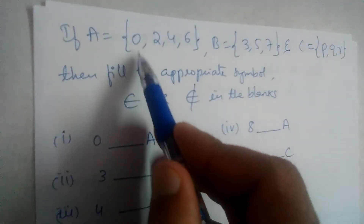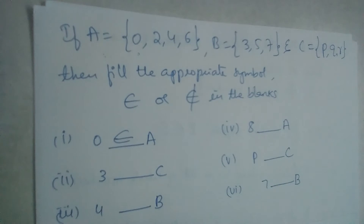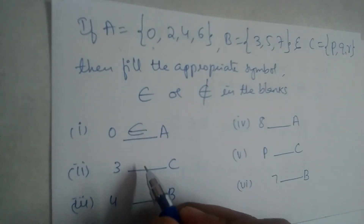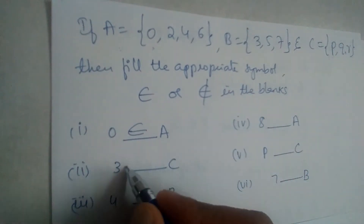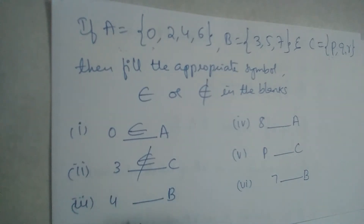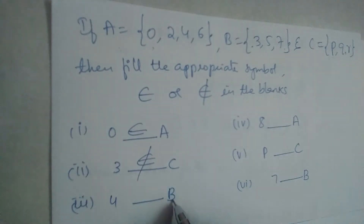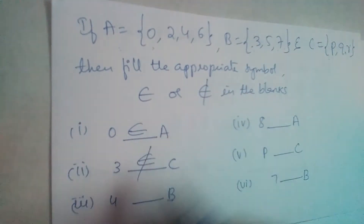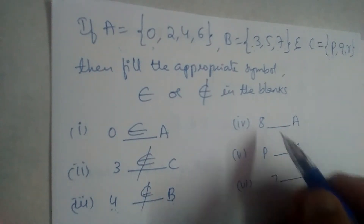Yes, zero is in set A, so zero belongs to A. Next, is 3 in C? C is {p, q, r}, so 3 does not belong to C. Then, B is {3, 5, 7}, so 4 is not an element of set B — 4 does not belong to B.